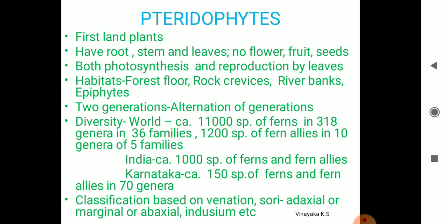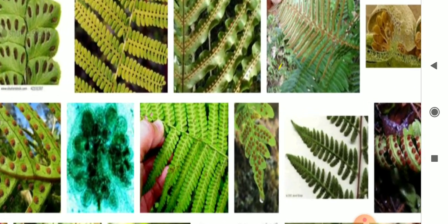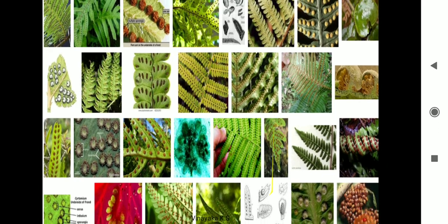The general properties of pteridophytes: first, they are the first true land plants. Second, they have a root system, stem, and leaves, but no flowers, fruits, or seeds. Just like all plants, they consist of photosynthetic structures — the leaves are present, and below the leaves you will find the spore-bearing structures called sori.